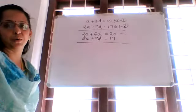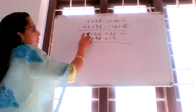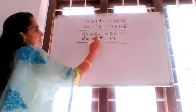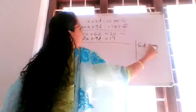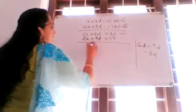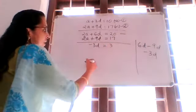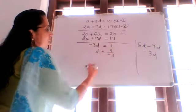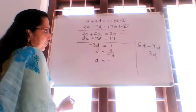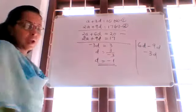Subtracting: 2A minus 2A cancels. Then 6D minus 9D gives negative 3D. So negative 3D is equal to 20 minus 17, which is 3. Therefore D is equal to 3 divided by negative 3. D is equal to negative 1.